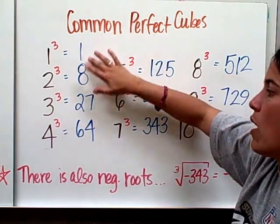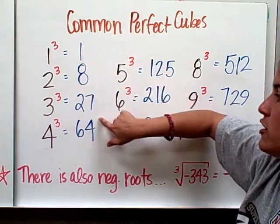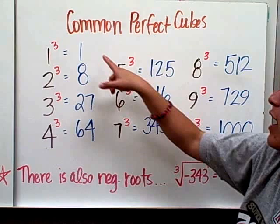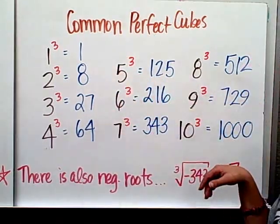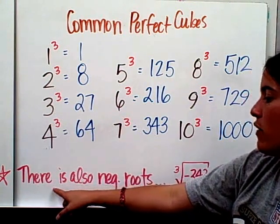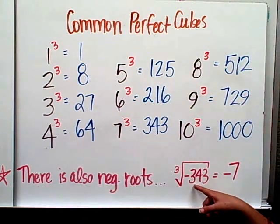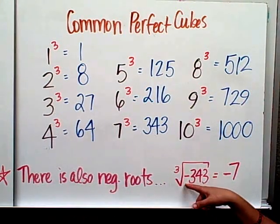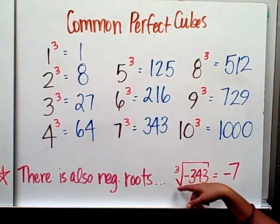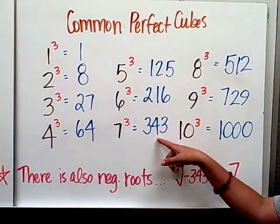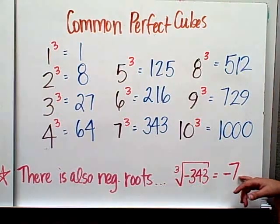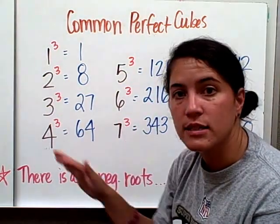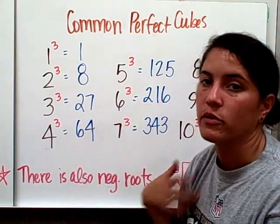And I would say 1, 8, 27, 64, and 125 are going to be the most common, but you can see all of these. And just remember that there's also the negative roots. So the cubed root of negative 343 would be, instead of a positive 7, it would be a negative 7. So take a moment to copy these down, and then press play when you're ready to go on.